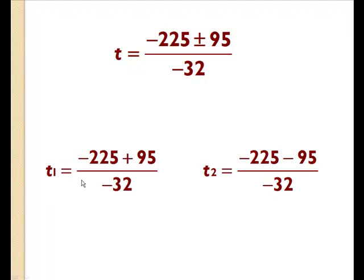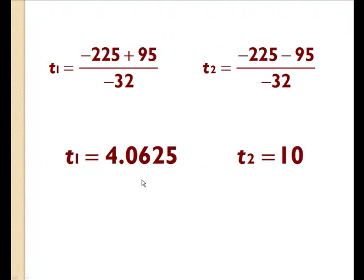I can break this t up into t1 and t2. So I'm going to treat it as two separate equations. Here's my plus, and here's my minus, and this becomes my final answer. This is what this reduces down to, and this is what this simplifies to.